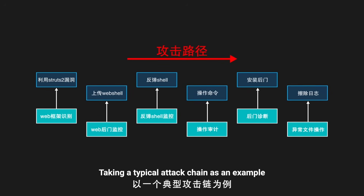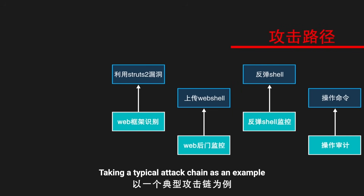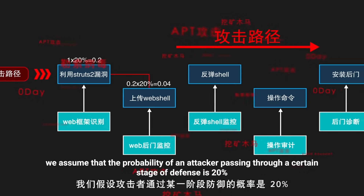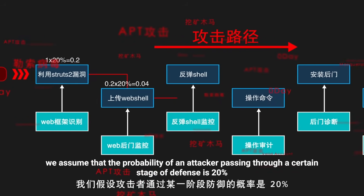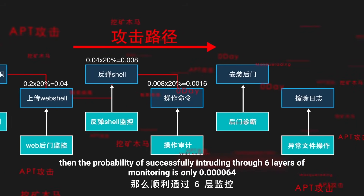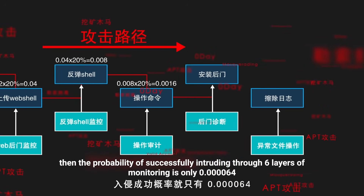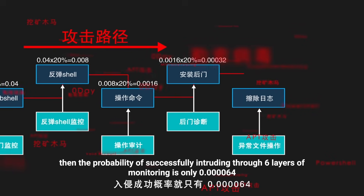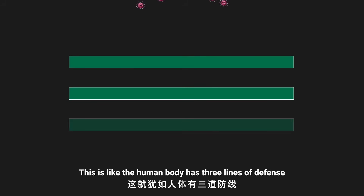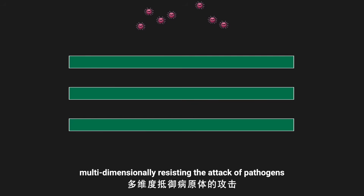Taking a typical attack chain as an example: if the probability of an attacker passing through a single stage of defense is 20%, then the probability of successfully intruding through six layers of monitoring is only 0.000064. This is like the human body having three lines of defense, multi-dimensionally resisting the attack of pathogens.